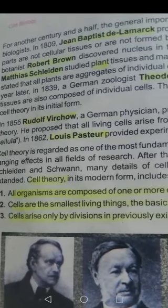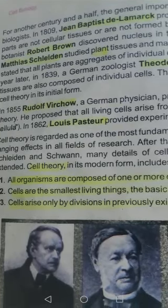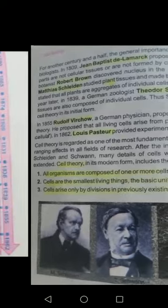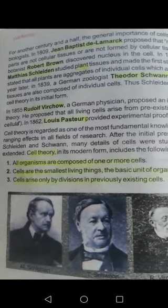The next scientist was Robert Brown, who discovered the nucleus in cells. Remember the date: in 1831 he discovered the nucleus. These dates are important from an exam point of view for MCQs and short questions.